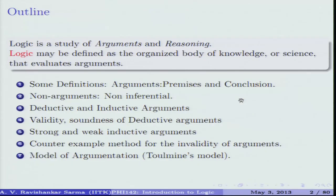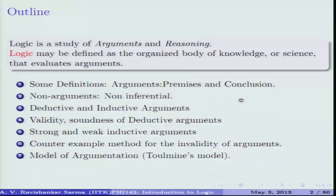Once we identify deductive and inductive arguments, we move on to important properties of logic: validity and soundness. Validity concerns how premises lead to a conclusion — logic is about what follows from what. For example, consider: all circles are squares, all squares are circles, all circles are parallelograms, therefore all squares are parallelograms. The conclusion may seem true, but the premises are false.